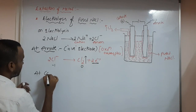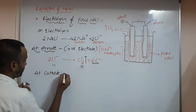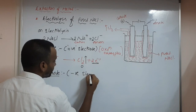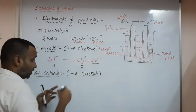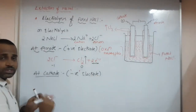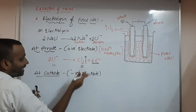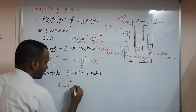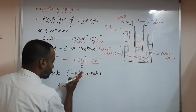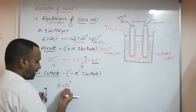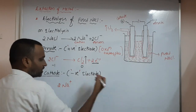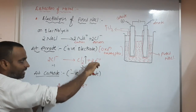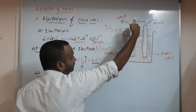At cathode, which is a negative electrode, Na⁺ ions will move towards cathode. Na⁺ means the octet configuration — it cannot lose electron again. So by taking electrons, Na⁺ will be reduced. Two electrons liberated at anode will move through the circuit.